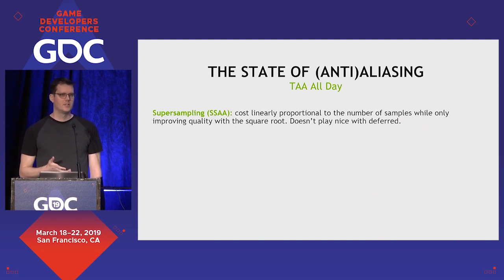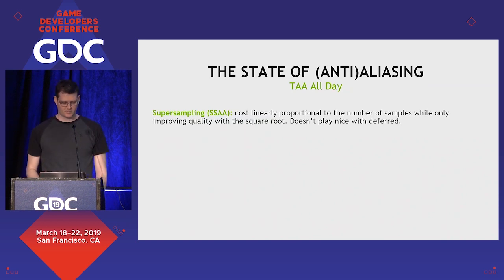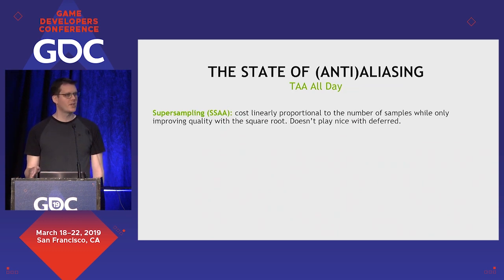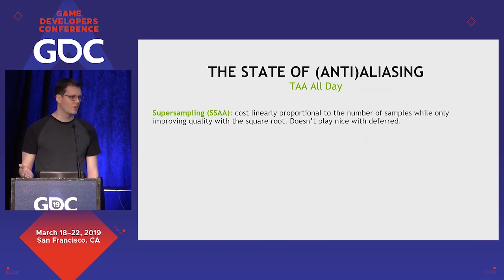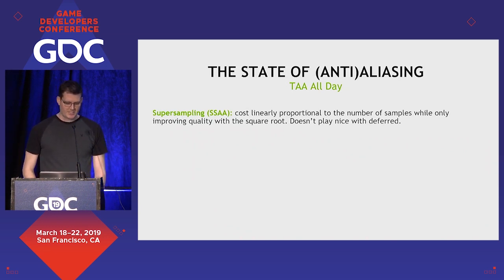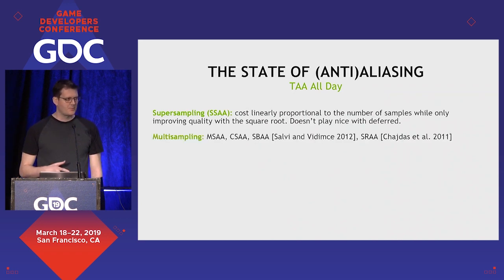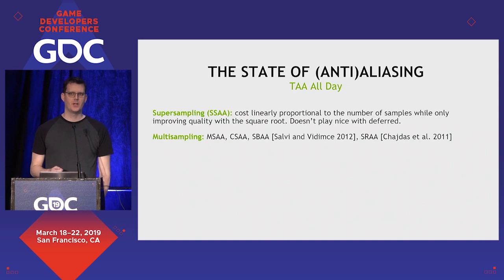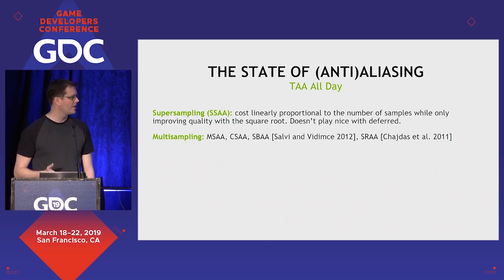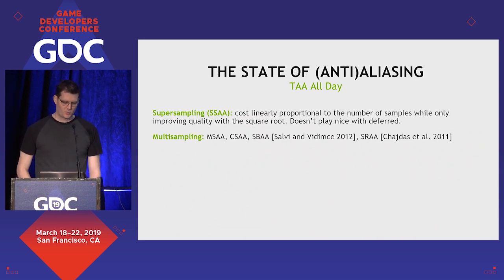The first approach we love is to supersample the scene — render at a higher resolution or supersample within subpixels. But the main problem is that the cost is literally proportional to the number of samples, while the quality improvement only increases with the square root. This also has bad properties for deferred renderers. There are options like multisampling that are a bit less costly, but even these can be too expensive for games with rich materials or other bottlenecks.